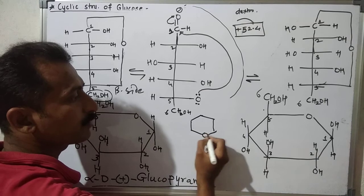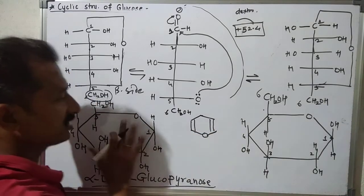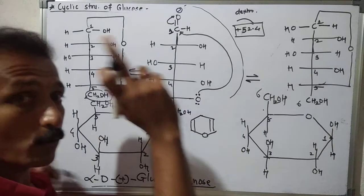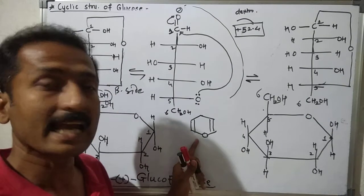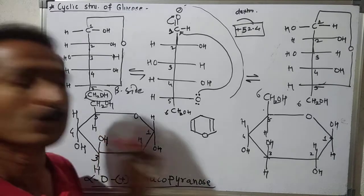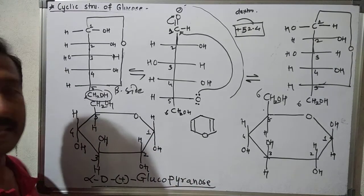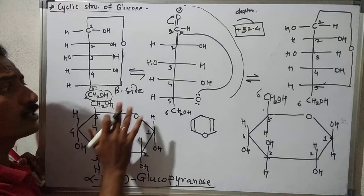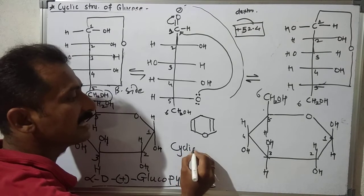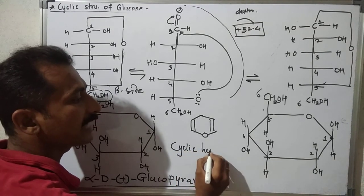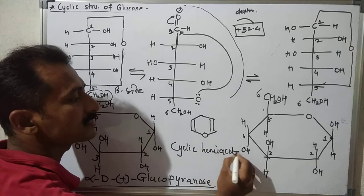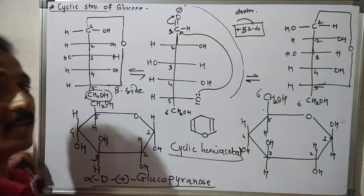This structure is analogous with the heterocyclic compound pyran, and this structure is looking like a cyclic hemiacetal — a cyclic hemiacetal.